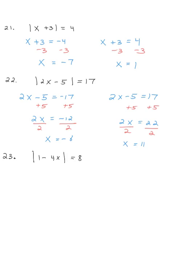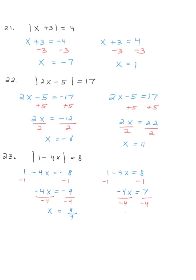The absolute value of 1 minus 4x equals 8 becomes two equations: 1 minus 4x equals negative 8, and 1 minus 4x equals positive 8. Subtracting 1 from all equations: negative 4x equals negative 9, and negative 4x equals 7. Dividing both sides by negative 4 in both equations results in nine-fourths in the first, and negative seven-fourths in the second.